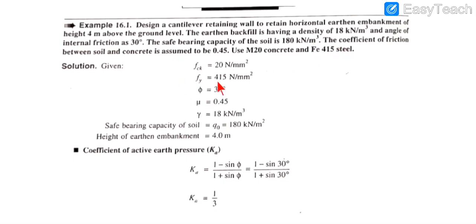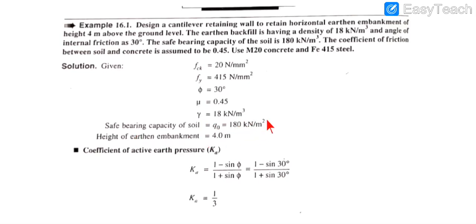First, we will write down what has been given: fck = 20, fy = 415, phi (angle of repose) = 30°, mu (coefficient of friction) = 0.45, density of soil gamma = 18 kN/m³, safe bearing capacity of soil q₀ = 180 kN/m², and height of earthen embankment = 4 meters.